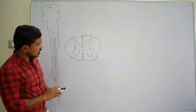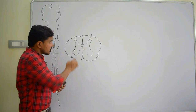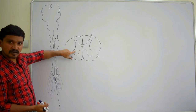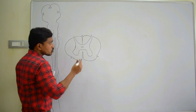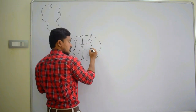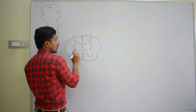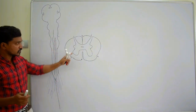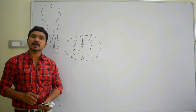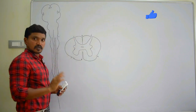This is the transverse section of the spinal cord in brief. If you observe, this is the posterior horn and this is the anterior horn. In the thoracic region, you can also see a lateral projection called the lateral horn, which is present in the thoracic region and upper two lumbar segments.